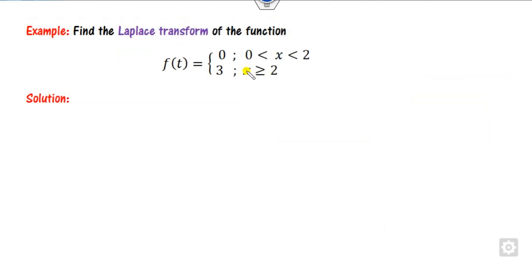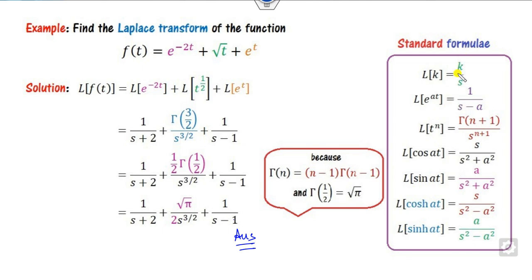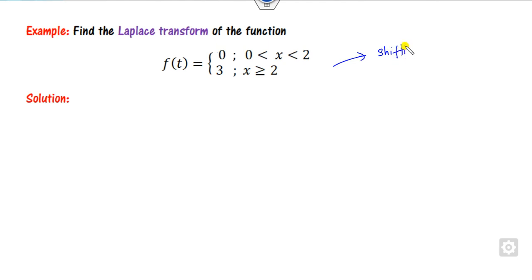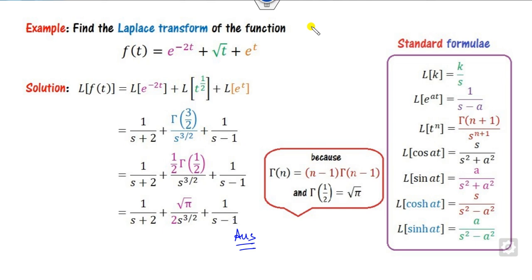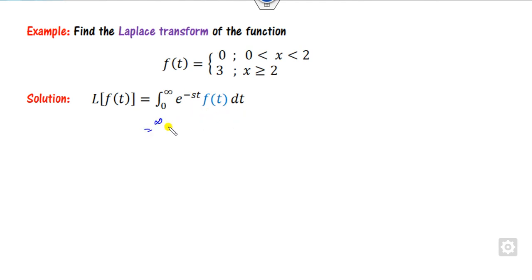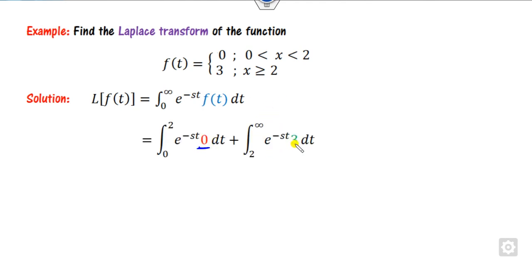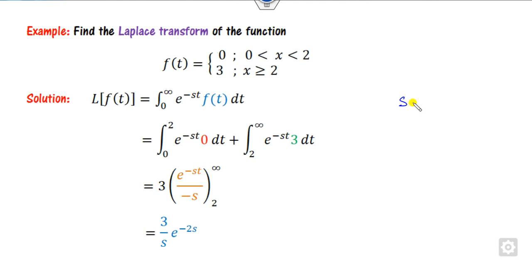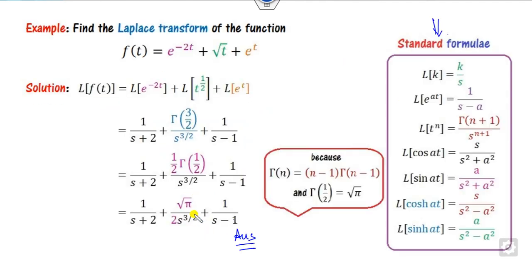For a piecewise function not expressible in standard form, we will later learn the second shifting theorem. For now, use the definition directly: integrate over 0 to 2 and then 2 to infinity. Substitute the respective values — one part gives 0, and the other integrates to e raised to power something divided by minus s. You can verify in each example that when s approaches infinity, the answer goes to 0 — that is how you check your answers.